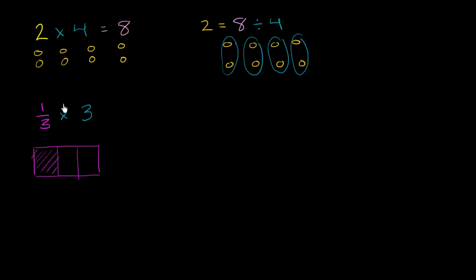And let me shade in 1 third of it. So that's 1 third. We're going to multiply by 3. So we're going to have 3 of these 1 thirds. Or another way of thinking about it, it's 1 third plus another 1 third, plus another 1 third. That's our first third, our second third, and our third third. And we get the whole. This is 3 thirds, or 1. So this is going to be equal to 1.